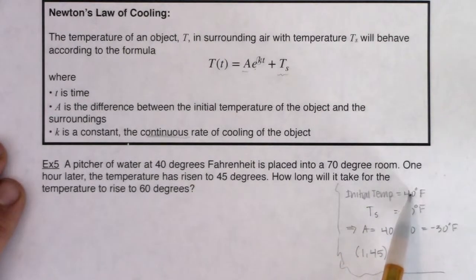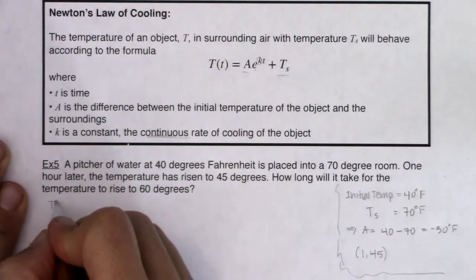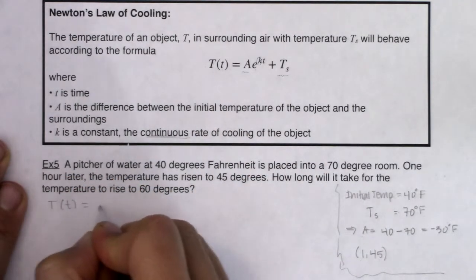So my initial temperature was 40, surrounding was 70. So my A value, the difference between those two, in this order, initial minus surrounding, negative 30. I also hear an ordered pair that they gave me, little t, right? My time was one hour, capital T, temperature was 45 degrees Fahrenheit. So let's see what we can start doing with my Newton's law of cooling.